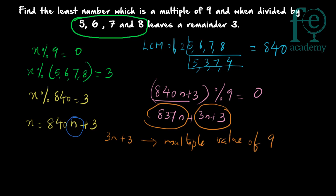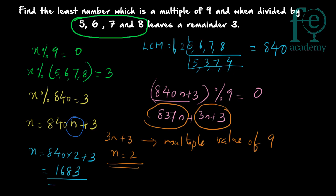We need the least n so that 3n + 3 is a multiple of 9. When n=1: 3×1 + 3 = 6, not a multiple of 9. When n=2: 3×2 + 3 = 9, which is a multiple of 9. So n = 2. Therefore x = 840×2 + 3 = 1683. So 1683 is the least number which is a multiple of 9 and when divided by 5, 6, 7, and 8 leaves remainder 3.